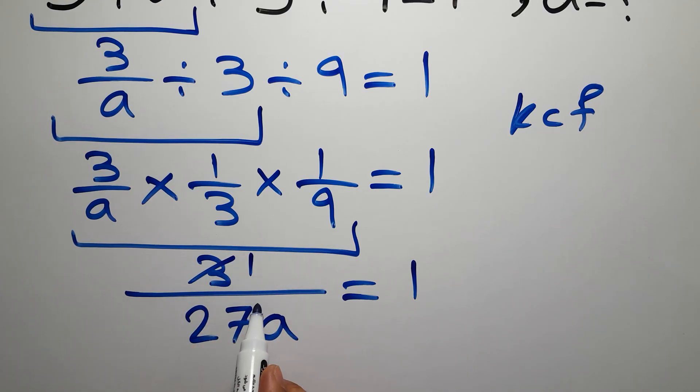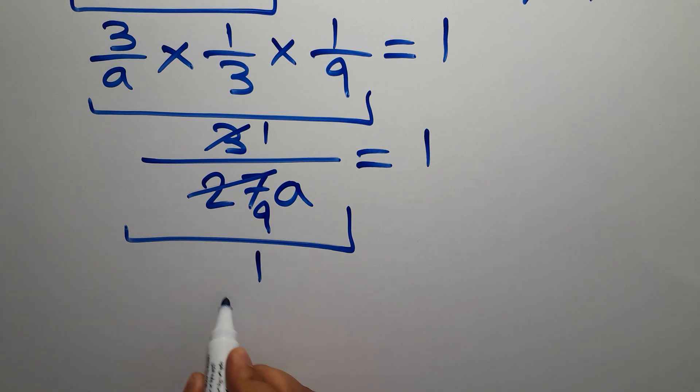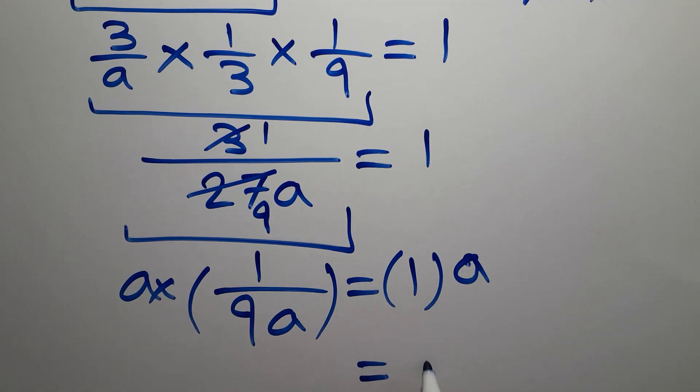So we have 1 over 9a. 1 over 9a equals 1. Now let's multiply both sides by a. On the right hand side we have just a.